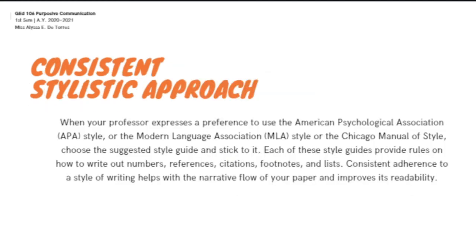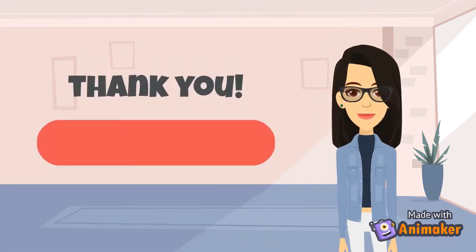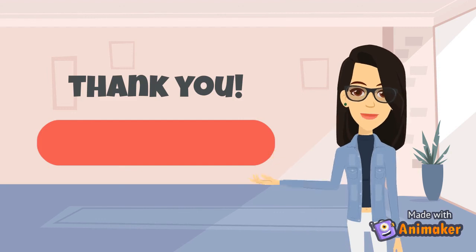Proceeding to consistent stylistic approach. When your professor expresses a preference to use the American Psychological Association or APA style, the MLA or Modern Language Association style, or the Chicago Manual of Style, choose the suggested style guide and stick to it. Each of these style guides provides rules on how to write out numbers, references, citations, footnotes, and lists. Consistent adherence to a style of writing helps with the narrative flow of your paper and improves its readability. And that ends our video. Did you learn something today? Thank you very much for watching. Bye!